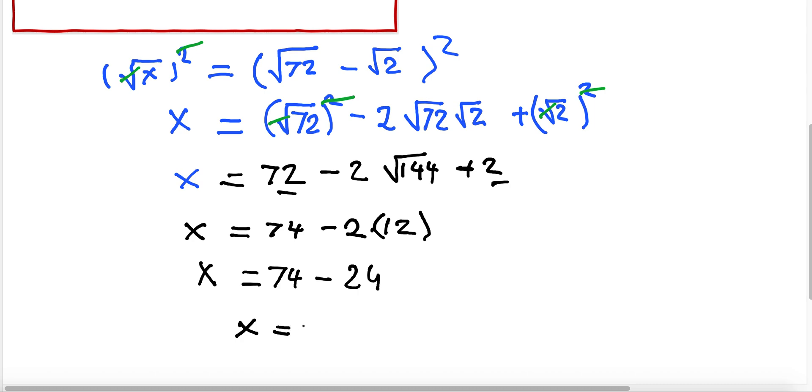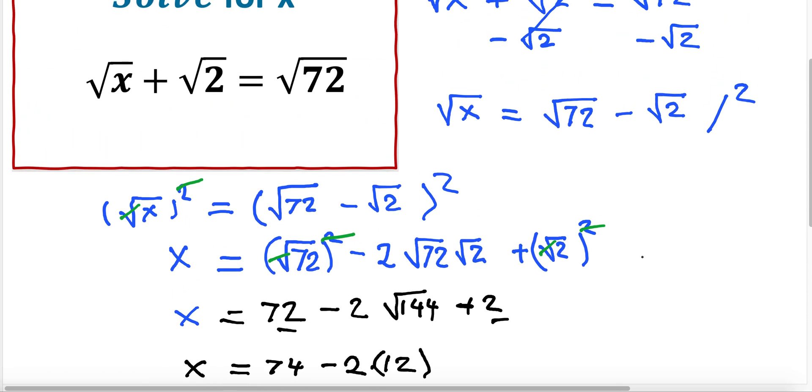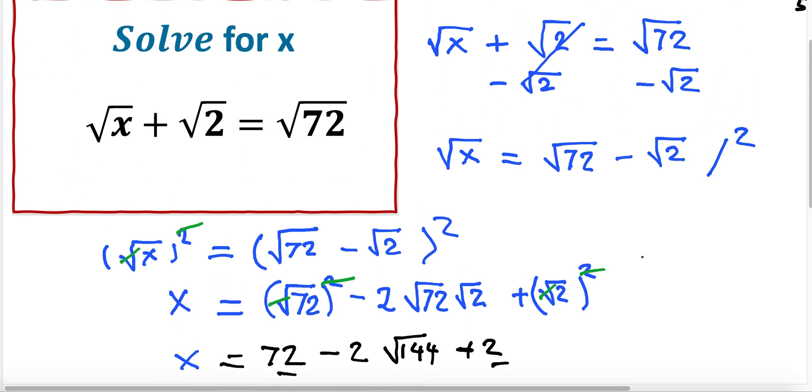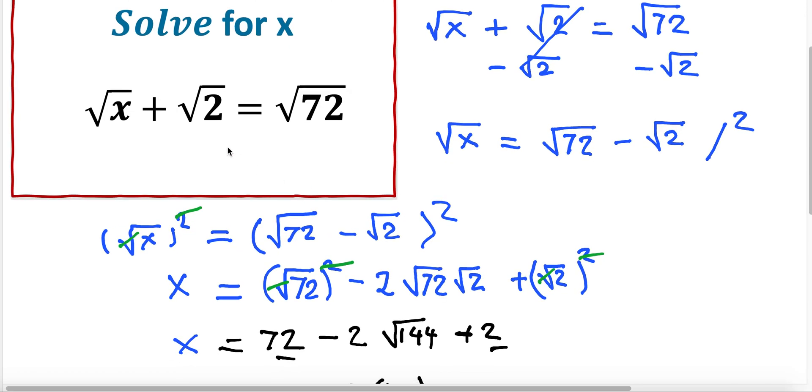Finally, x is going to be 74 minus 24, which is 50. So x is 50 to satisfy this equation. And if you have any doubts, you can check it. You can plug in the square root of 50. Square root of 50 is 25 times 2, which gives you 5 square root of 2. Plus square root of 2 is 6 square root of 2, and 72 is 36 times 2, which is 6 times square root of 2. But you can do it step by step to convince yourself.